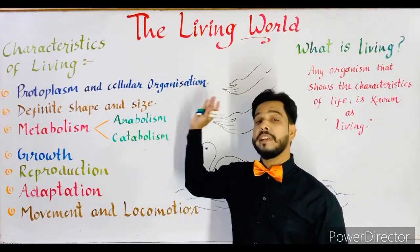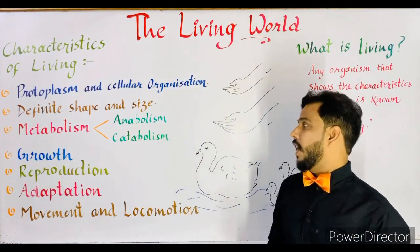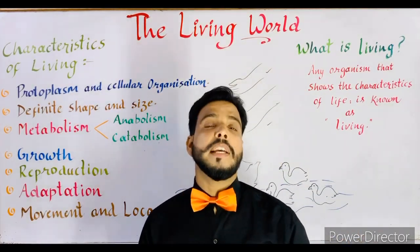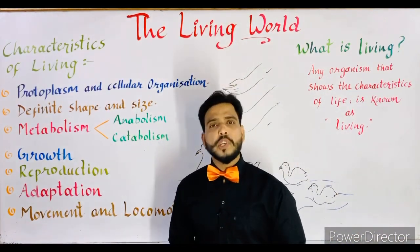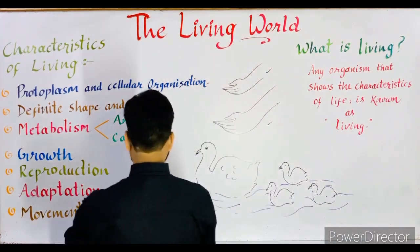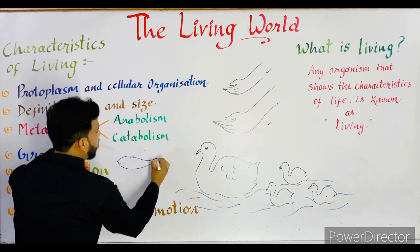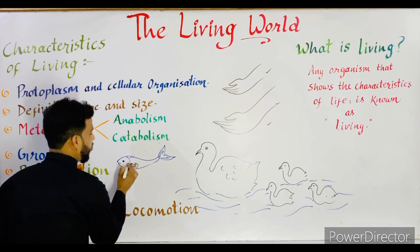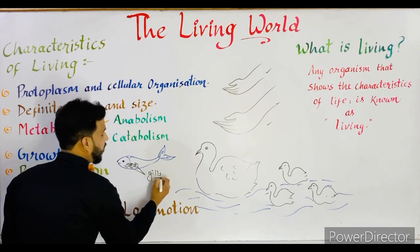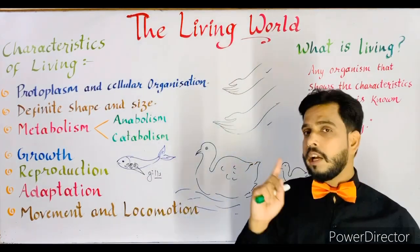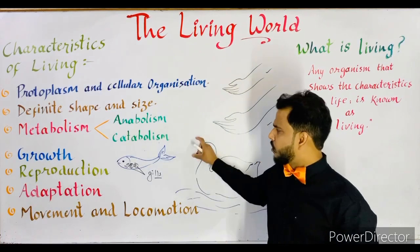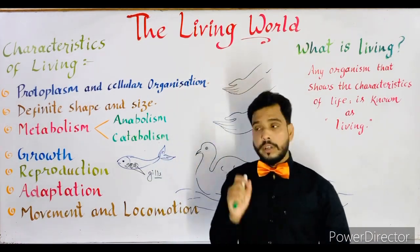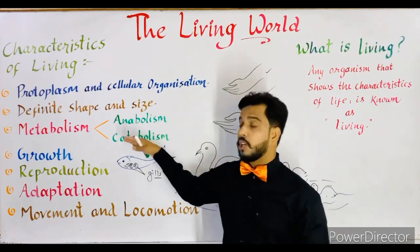The next characteristic is adaptation. Adaptation is the capability of an organism to adjust itself to environmental conditions. For example, a fish living in a pond or sea consists of gills for respiration. Gills are the organs for aquatic respiration, present in fishes. If a fish did not have gills, it would be unable to perform respiration inside the water. So gills are the organs through which the fish makes its adaptation with its environment.